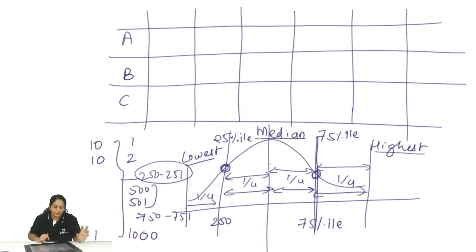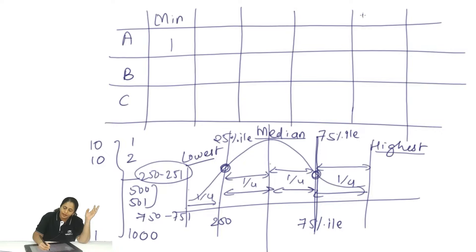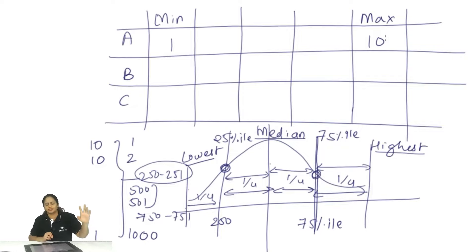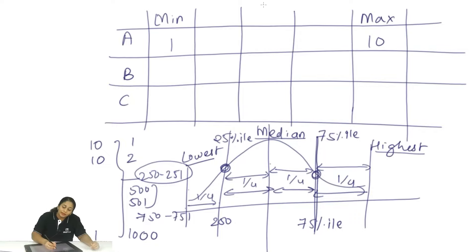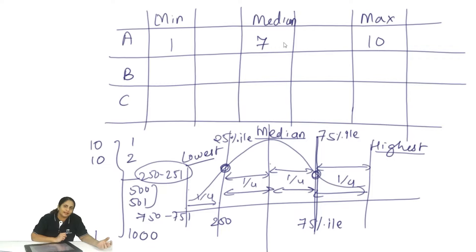Consider the 1000 ratings a movie has gotten. The lowest score is 1, the maximum is 10. The median rating for movie A is say 7 — on average people have given it 7 out of 10. But can you tell what kind of movie it is based only on lowest, highest and median? No, because even a terrible movie will have some people rating it brilliant, and even a great movie will have some people rating it low.